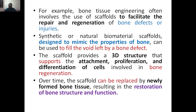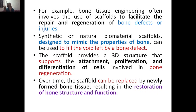Both synthetic and natural biomaterial scaffolds can be designed to copy or mimic the properties of bone. Because of the bone defect there is a missing or damaged region — a void — inside the bone structure. We can use a scaffold, either natural or synthetic, that mimics the structure or properties of bone to fill that void.